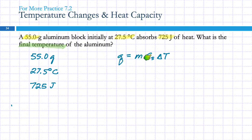So, the 55 grams represents which of these variables? M. Is this the change in temperature? 27.5? No, it's the initial temperature, isn't it? That's what it started at. What's the final temperature? Well, that's what we're trying to find. Tf equals, I don't know. And then what's the 725 joules? Is that the heat capacity or the heat? It's the heat, Q.